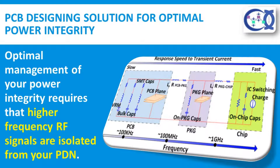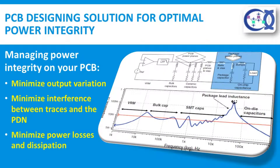Optimal PCB power integrity design: optimal management of your power integrity requires that higher frequency RF signals are isolated from your PDN. Largely, the power integrity of your board depends upon your application of design techniques and choices for its manufacture to mitigate these potential issues and promote power and signal integrity. Managing power integrity on your PCB can be viewed as designing your board such that power supply output variation is minimized, interference between traces and the PDN is minimized, and power losses and dissipation are adequately managed.